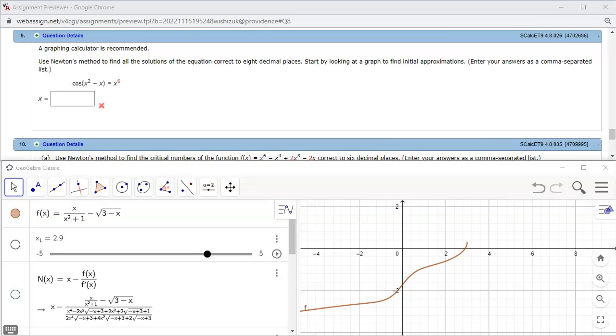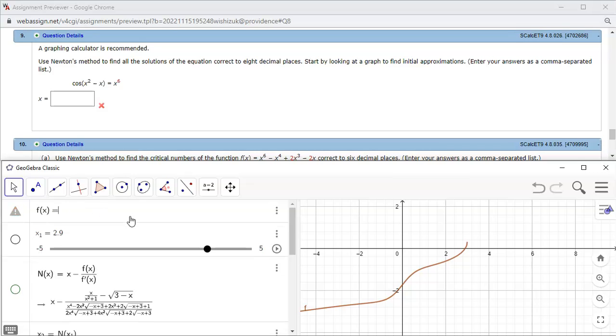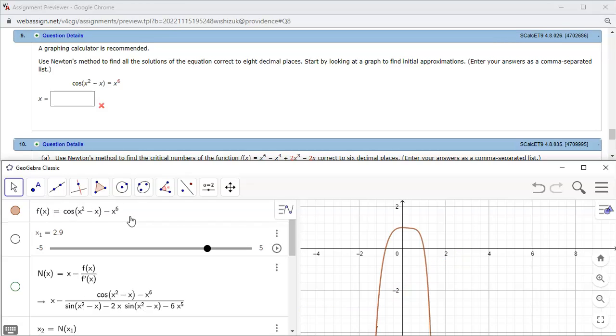Let's look at Hallmark 4.8, problem number 9. I'm going to put all the terms on the left, so our f(x) is going to be cosine of x squared minus x minus x to the sixth power. Hit enter.